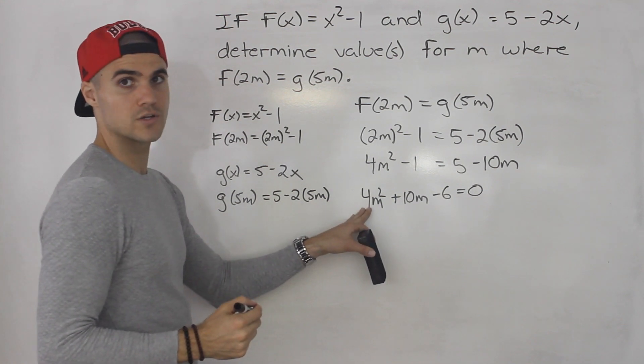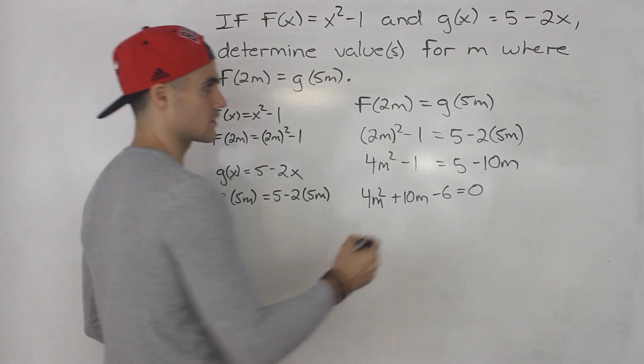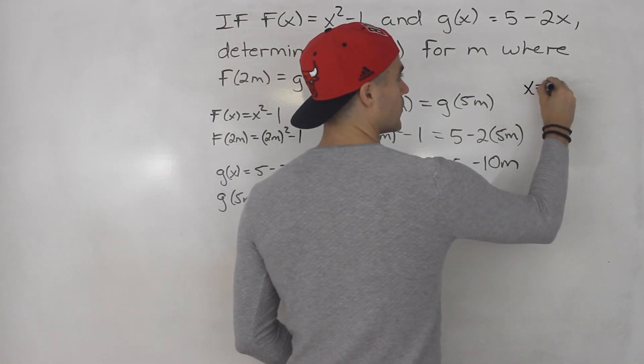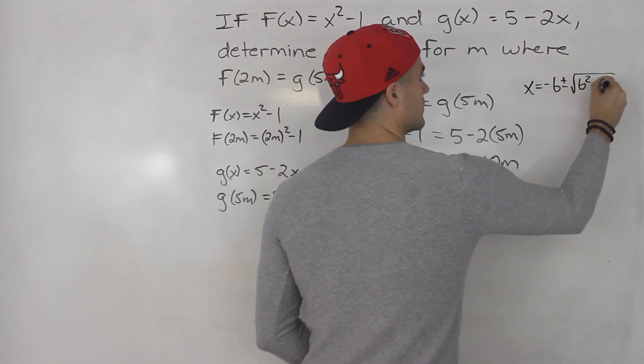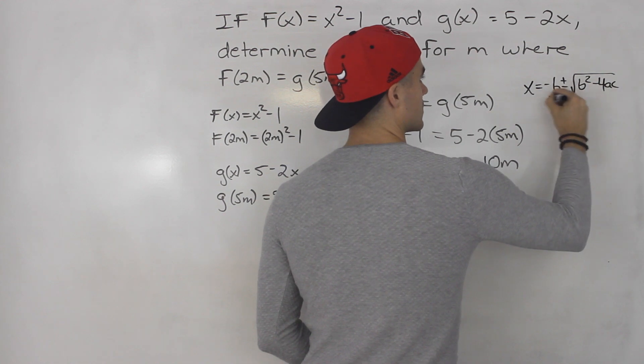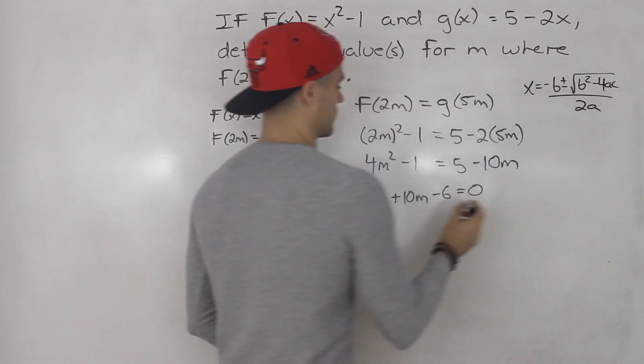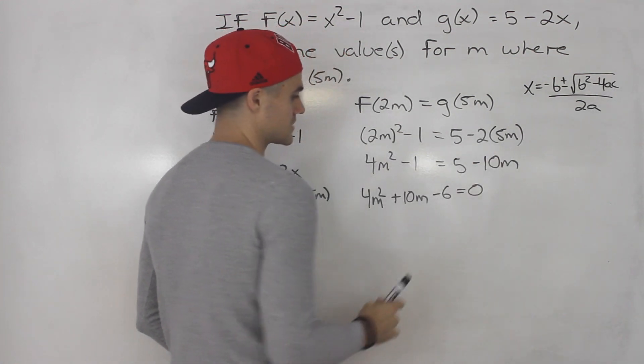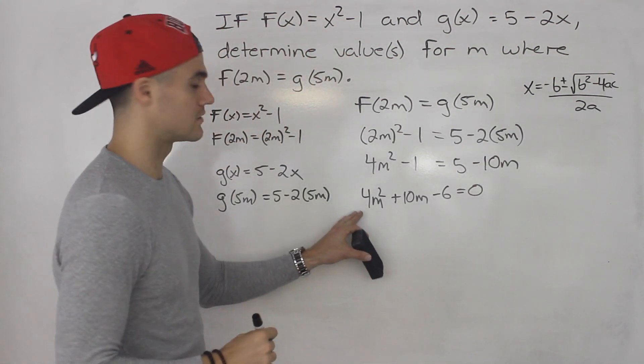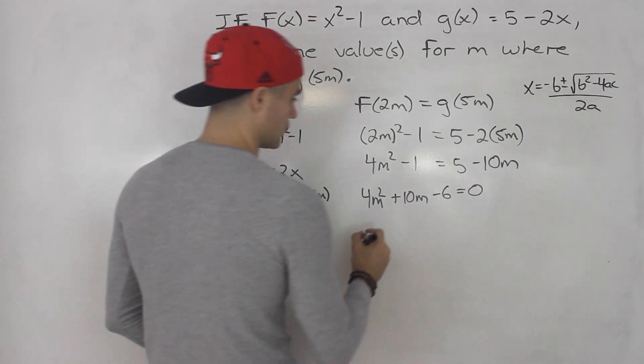Notice this is a quadratic equation. You could plug it into the quadratic formula if you want: (-b ± √(b² - 4ac))/2a. The a value is 4, b is 10, c is -6. Or you could try to factor it. I think this actually factors smoothly.